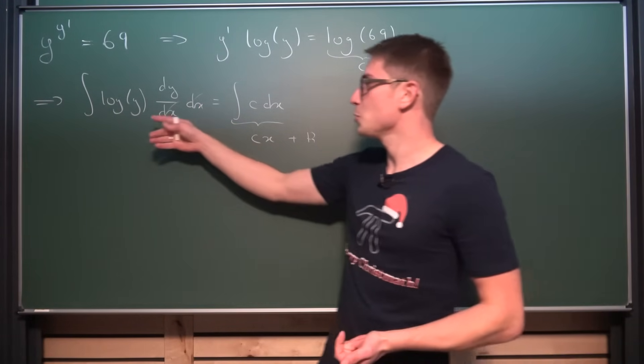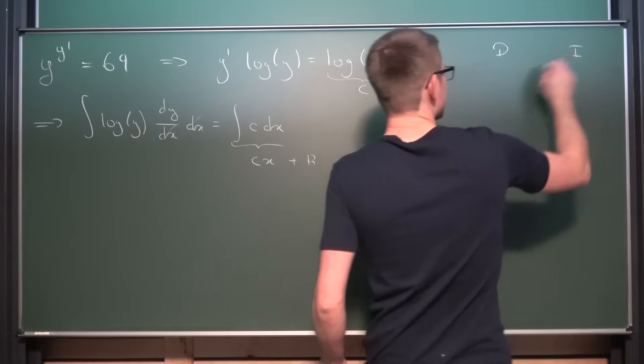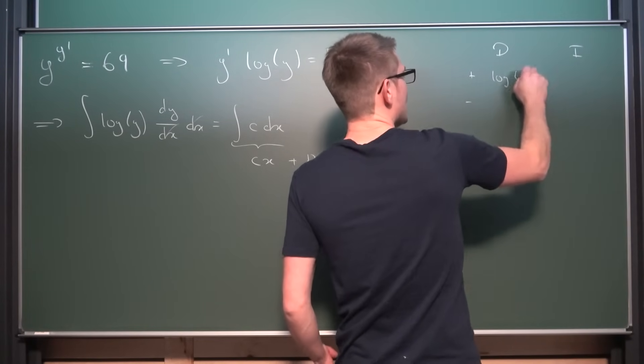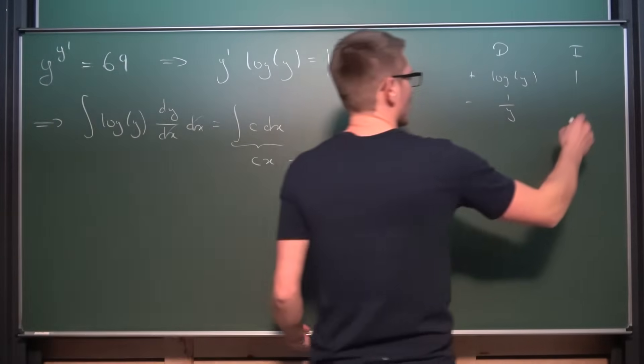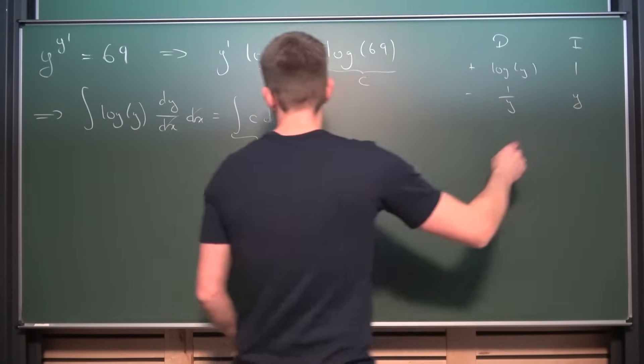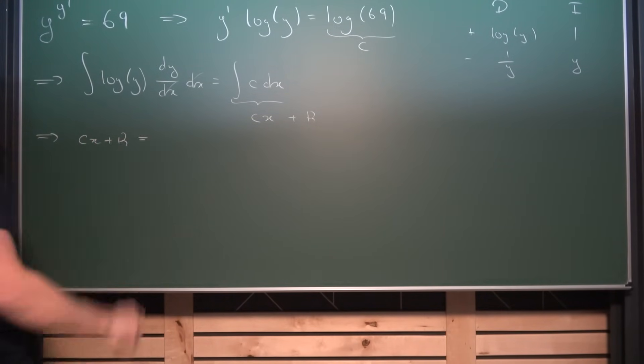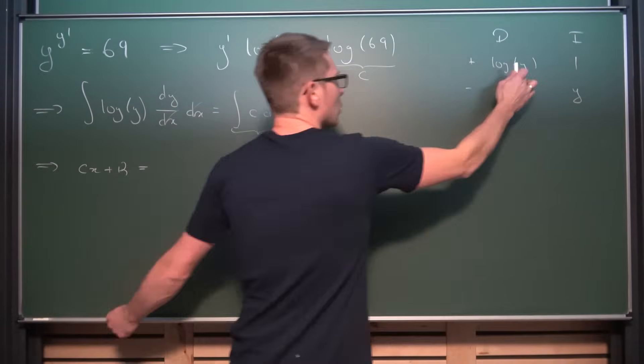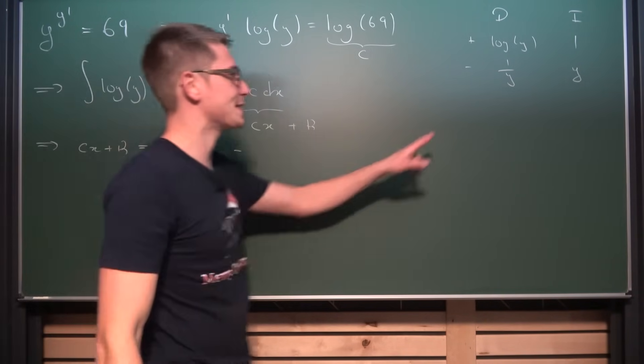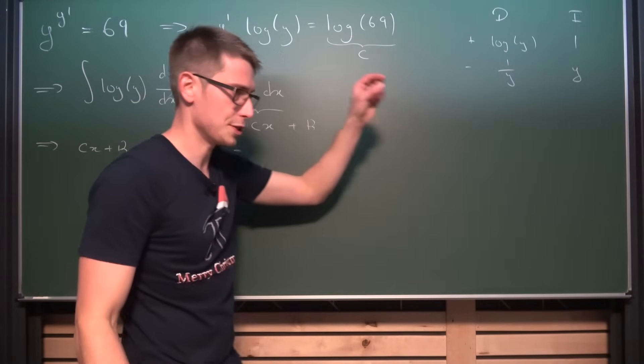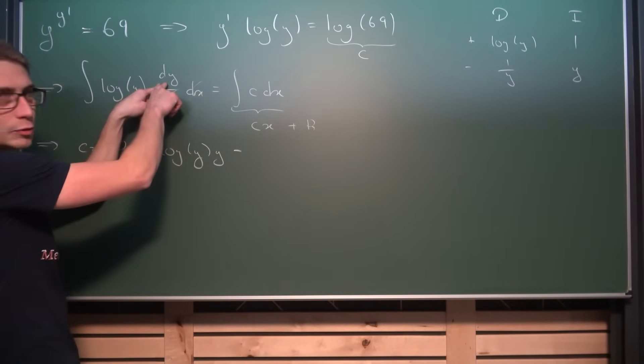So the other thing we need to do is to integrate the logarithm of y with respect to y. Now here we can just make use of integration by parts. The I method very easy to differentiate the log of y giving us 1 over y and integrate 1. Because log of y is just 1 times log of y. And you're gonna end up with y.